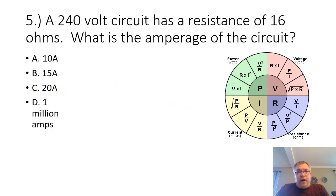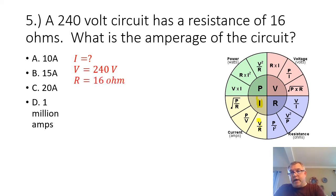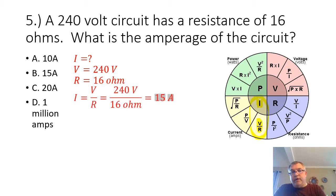Problem five: a 240-volt circuit has a resistance of 16 ohms. What is the amperage of the circuit? We are looking for the amperage. We are given the voltage at 240 volts and the resistance at 16 ohms. Our formula is I equals V divided by R. 240 volts divided by 16 ohms equals 15 amps.